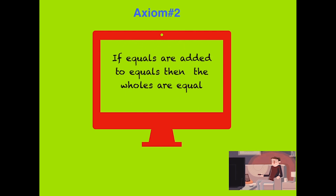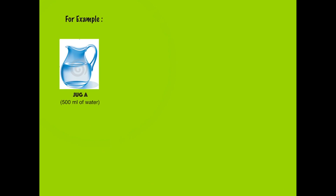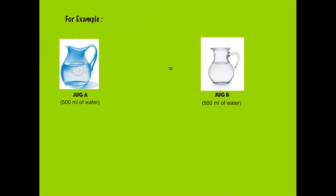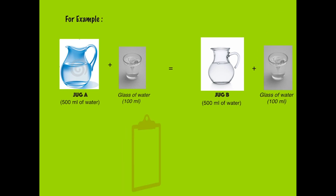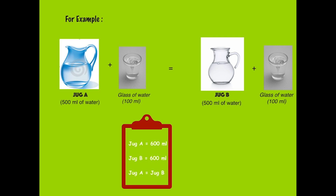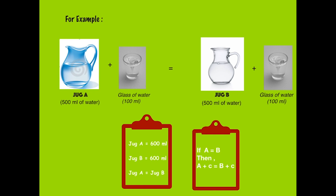The next axiom states: if equals are added to equals, then the wholes are equal. For example, there are two jugs — jug A and jug B — each with an equal amount of water, that is 500 ml. If we add 100 ml of water to both of them, the total quantity in both jugs will still remain the same, that is 600 ml. So if A = B, then A + C = B + C. It is important that C added to both sides must be equal — for example, A + 4 = B + 4.